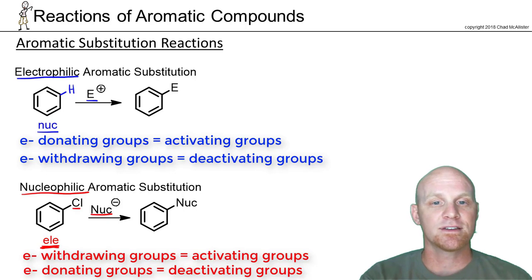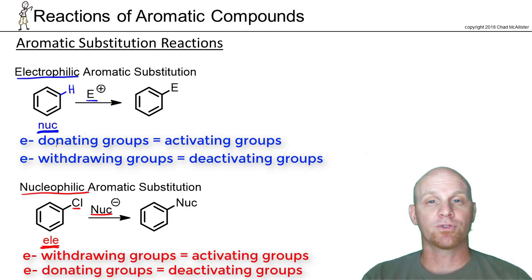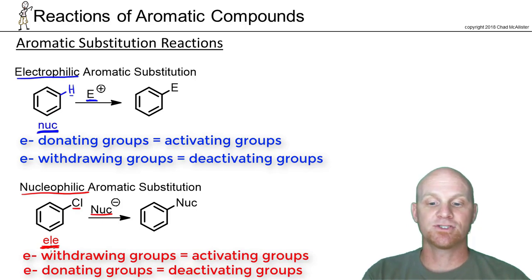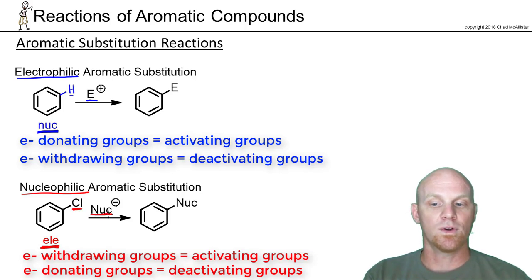To summarize the key differences: in electrophilic aromatic substitution, benzene's job is to be the nucleophile — that makes electron-donating groups activating and electron-withdrawing groups deactivating, and we're replacing a hydrogen with an electrophile. In nucleophilic aromatic substitution, benzene's job is to be the electrophile — electron-withdrawing groups are activating, electron-donating groups are deactivating, and we're replacing a halogen with the nucleophile.